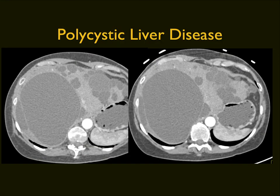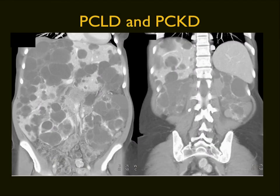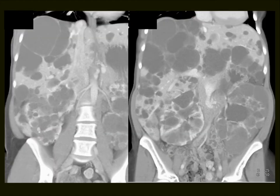Polycystic liver disease can involve multiple cysts that replace the entire liver. They can be small or large. About half the patients with polycystic liver disease also have polycystic kidney disease. Some patients have only polycystic liver disease with normal kidneys. The classic combined case shows large kidneys bilaterally with multiple cysts and multiple cysts throughout the liver — very classic polycystic kidney disease and polycystic liver disease together.